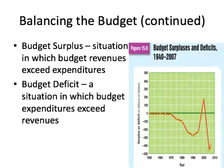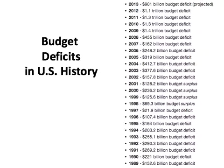A budget surplus means we have leftover money; a deficit means we do not. If you look at the graphs from 1989 to 2013, it's deficit, deficit, deficit. But we do have a period from 1998 to 2001 where we actually had a surplus — money left over at the end of the year — which could then be used to pay down the national debt. After that, it doesn't go down.